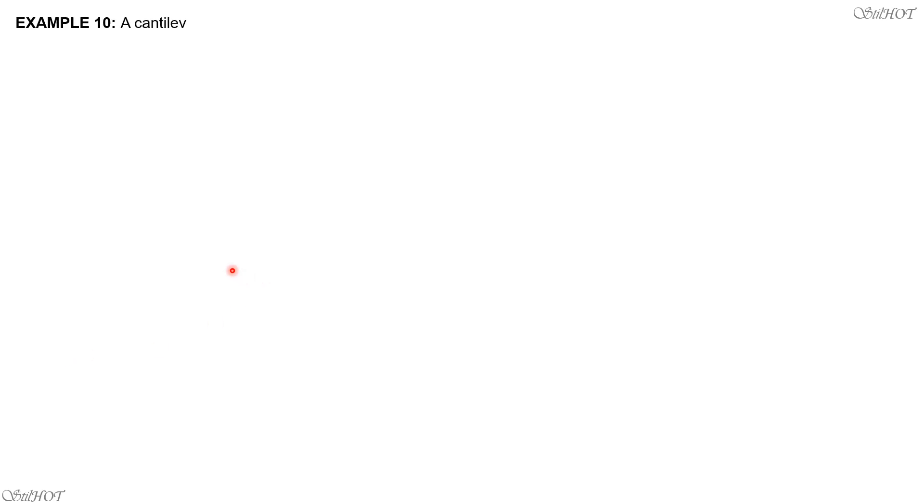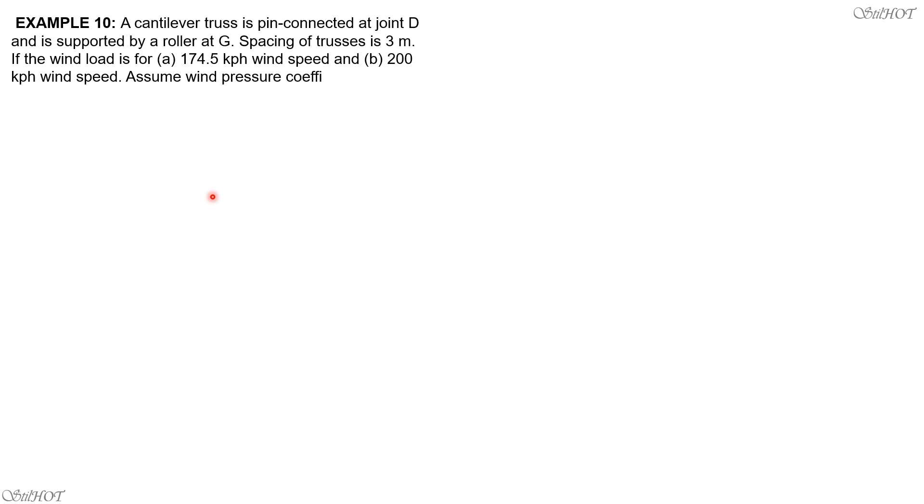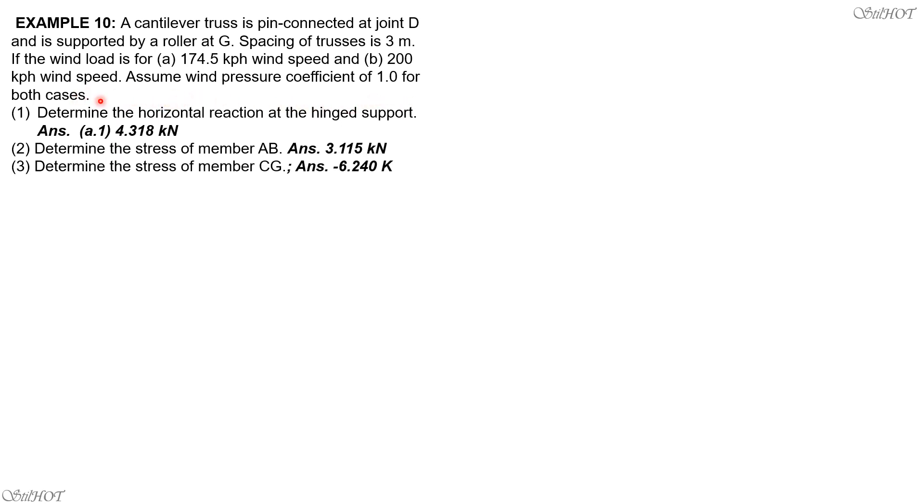Okay, let's have example 10. A cantilever truss is pin-connected at joint D and is supported by a roller at G. Spacing of trusses is 3 meters. If the wind load is for 174.5 km per hour wind speed, then assume wind pressure coefficient 1.0 for both cases, determine the horizontal reaction at the hinge support, the stress of member AB, if it is tension or compression. Determine the stress of member CG or force of member CG.